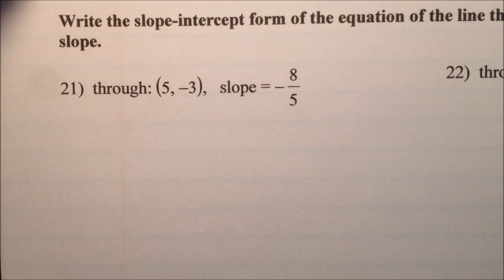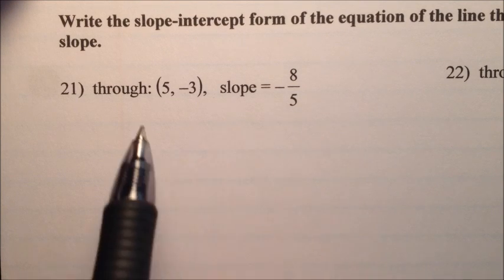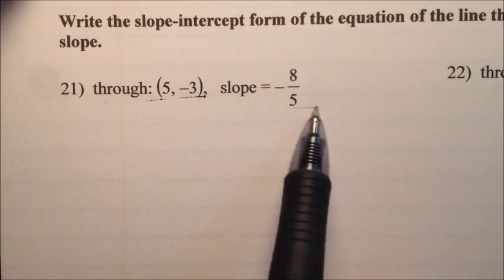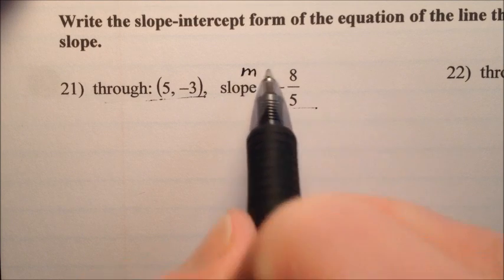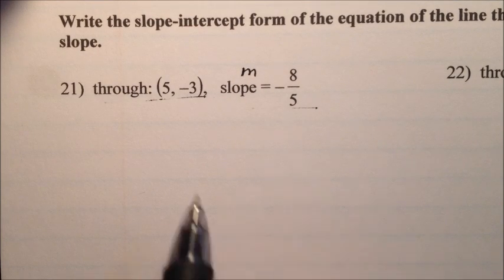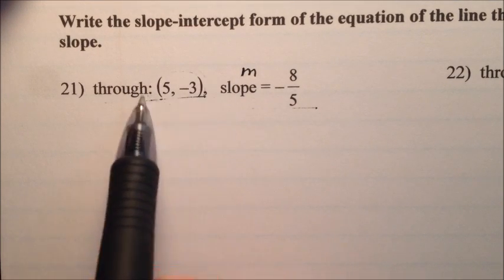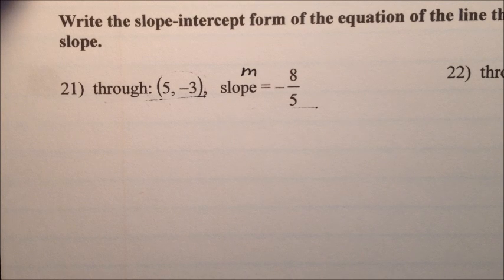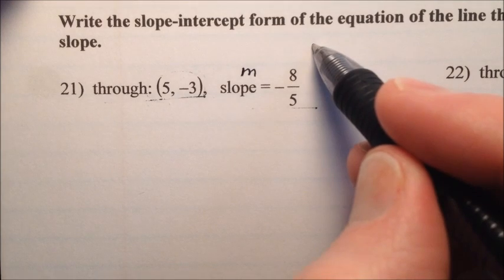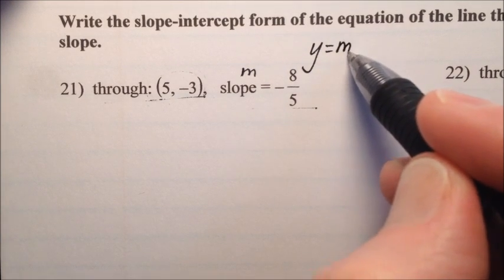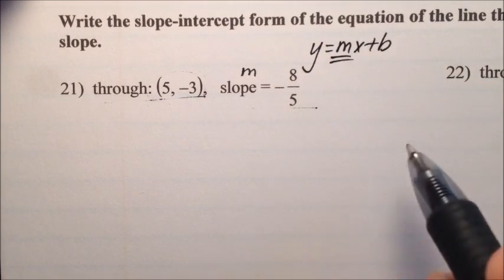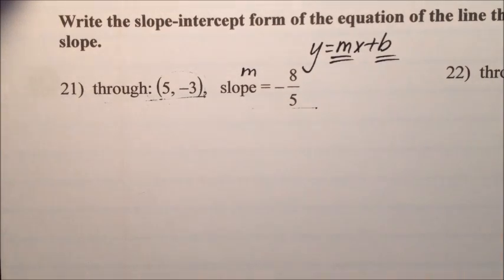In problems 21 through 24, we're told to write the slope-intercept form of the equation of the line through the given point with the given slope. The slope is nice because that's just going to be m. But the point helps us find what we're missing — we have m, but we don't have b. So we need to go search for b.